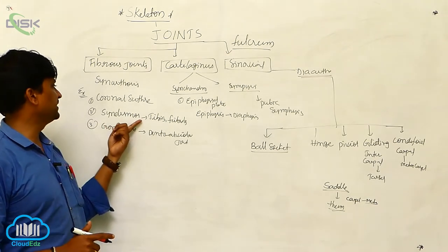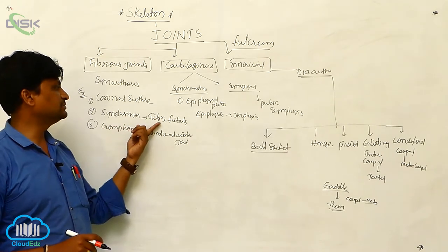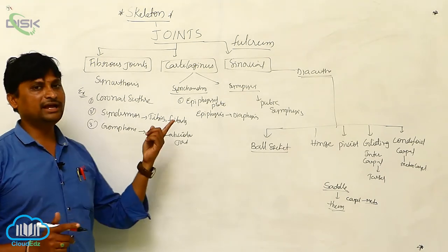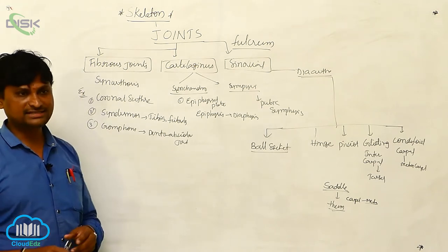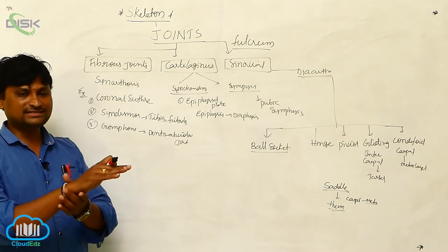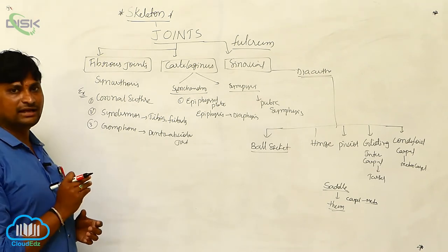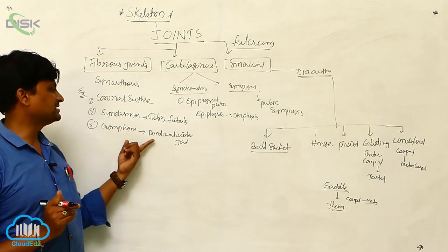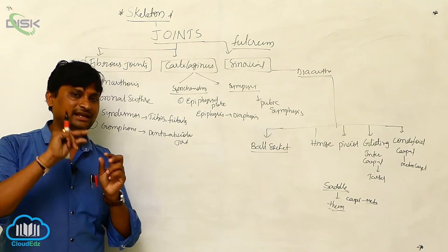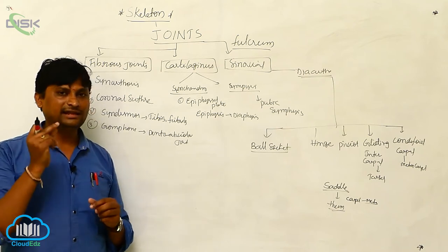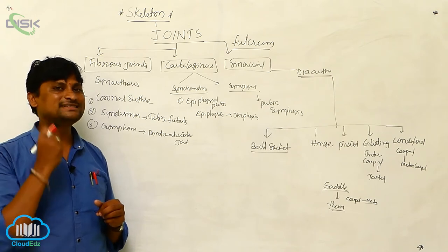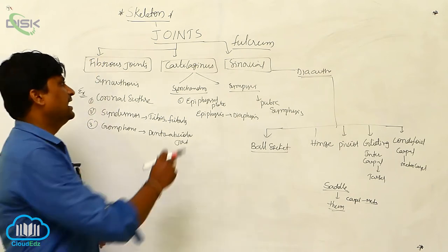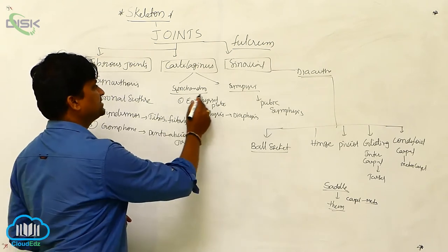Next is synarthrosis, which includes the joint between the tibia and fibula. The tibia and fibula, located in the leg area, show just a little bit of movement. Next is gomphosis, which is the dento-alveolar joint. Dento means teeth — the teeth are attached to the alveolar bone, the dentary bone. This attachment is called the dento-alveolar joint, and it is considered a fibrous joint.